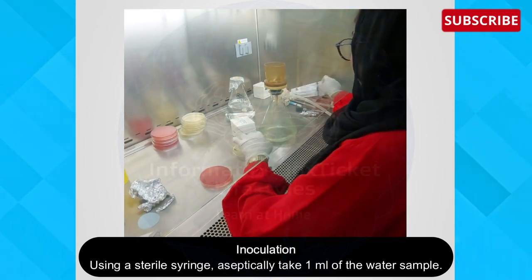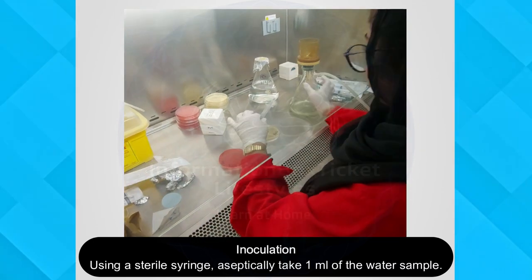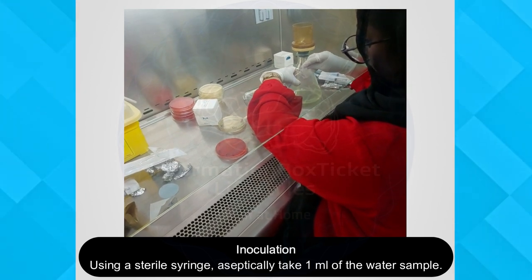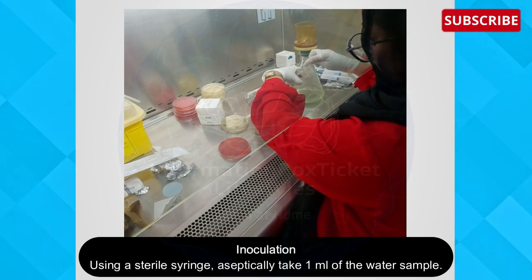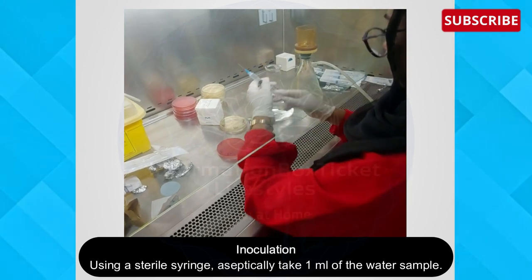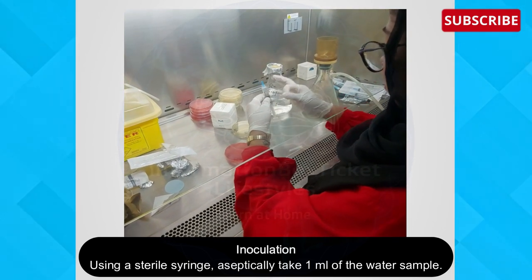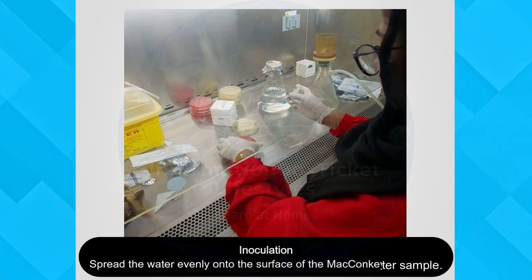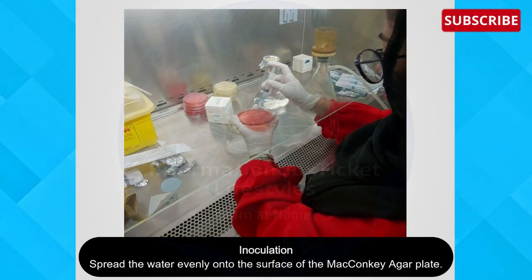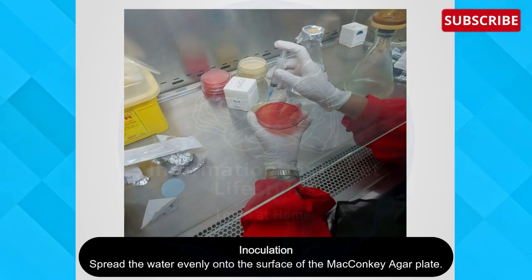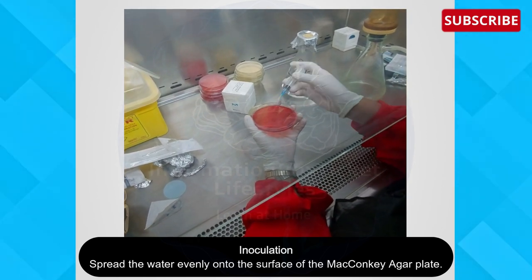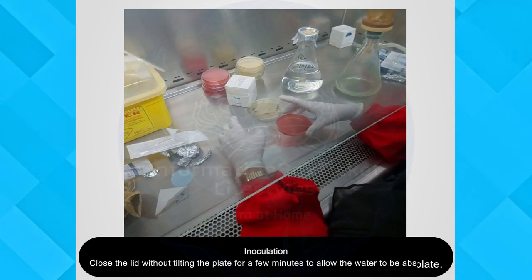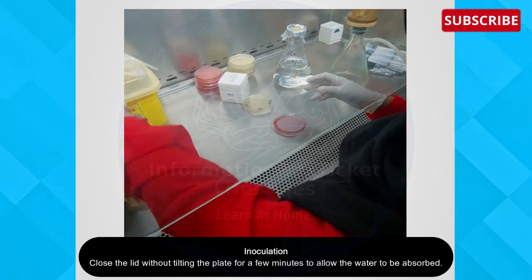Now let's begin with the inoculation. Using a sterile syringe, aseptically take one ml of water sample. Make sure you remove the air bubbles from the syringe. Spread the water evenly on the surface of the MacConkey agar plate. Close the lid without tilting the plate for a few minutes to allow the water to dry.